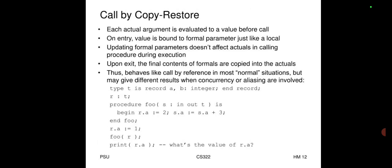Call by copy-restore: each actual argument is evaluated to a value before the call. On entry, the value is bound to the formal parameter, just like a local variable. Updating formal parameters does not affect the actual during execution. Upon exiting, the final contents of the formals are copied back into the actuals. This behaves like call by reference in most normal situations but may give different results with concurrency or aliasing. Example: type T is record(a, b: integer); procedure foo(in out T).